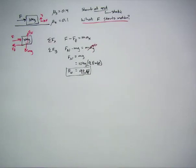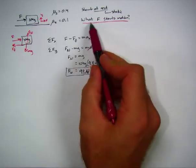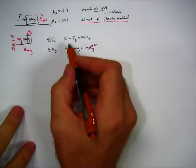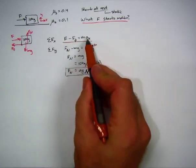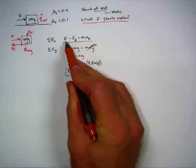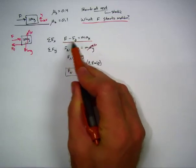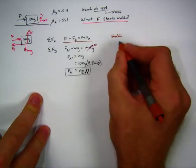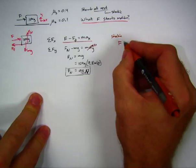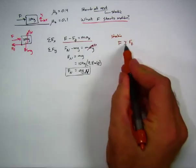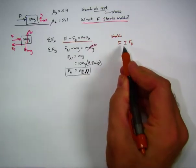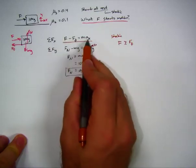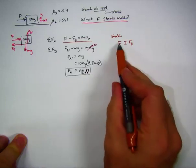What about the X direction? How do we answer our original question — what force starts motion? Looking at the X equation, motion starts if we have an acceleration. If the applied force is bigger than friction, the box will move; if friction wins, it will not move. So the question is: is the applied force greater than or equal to the force of friction? The equal-to case is the limiting case — exactly equal means we're just on the border of moving, which gives us the minimum force required.